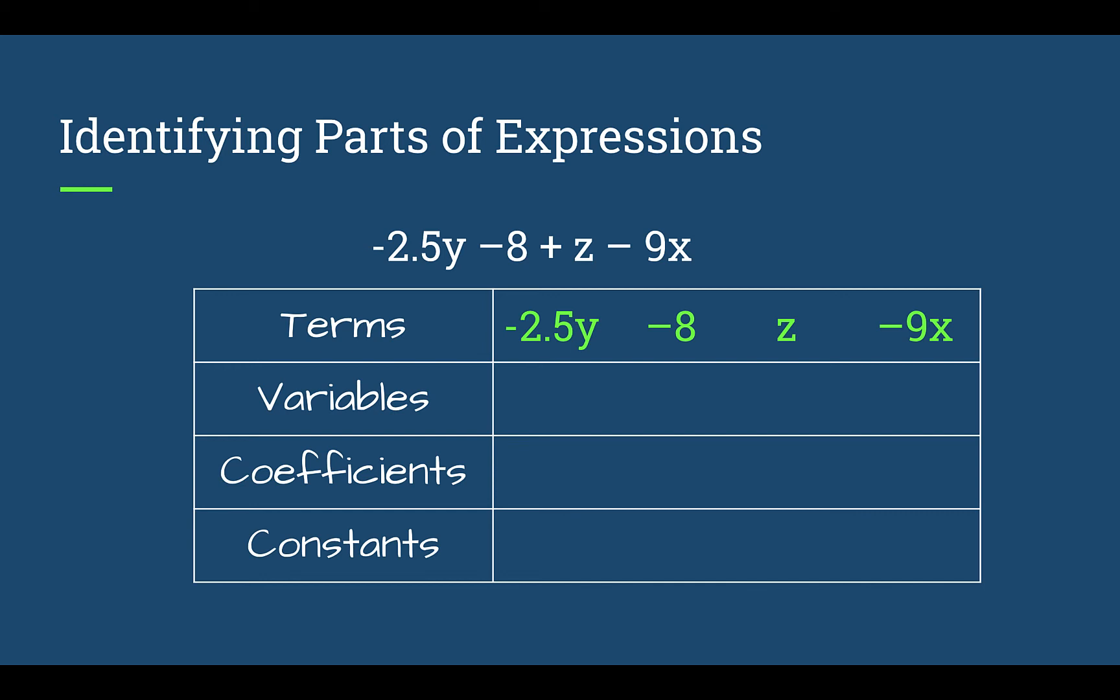In this expression, your variables are x, y, and z. Or you might have wrote y, z, and x. Your coefficients are the numbers in front of those. So negative 2.5 was the coefficient of y. 1 is the coefficient of z. Remember, if there is no coefficient, it's a 1. And then negative 9 is our coefficient of x. And then in this expression, we have one constant, and it is negative 8.